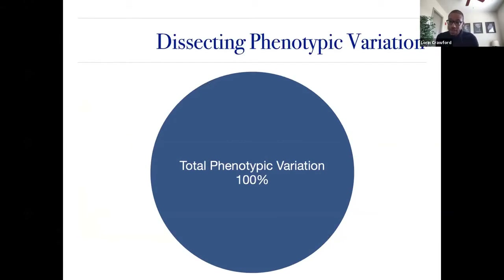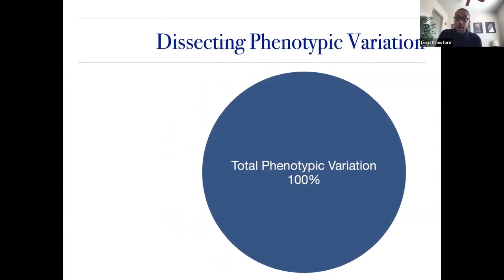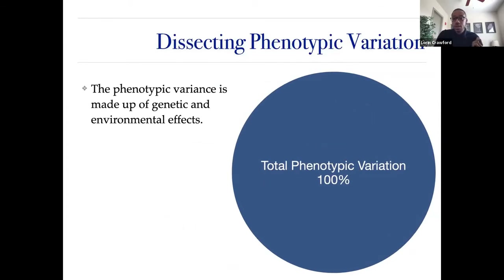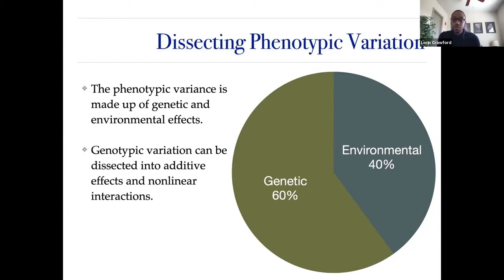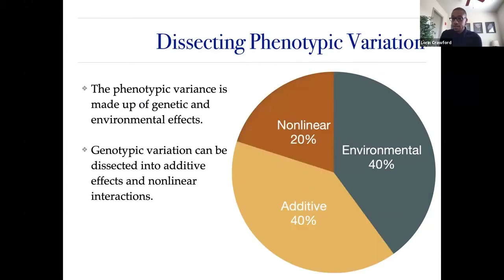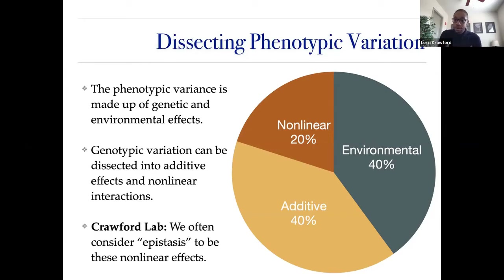When I think about dissecting phenotypic variation, I think of the variance of a trait as a pie — 100 percent. You can break it into components: a genetic component and an environmental component. The genetic side breaks down further into additive effects — gene A plus gene B — and nonlinear effects like gene A times gene B. My group focuses on statistical epistasis, that polynomial interaction effect.